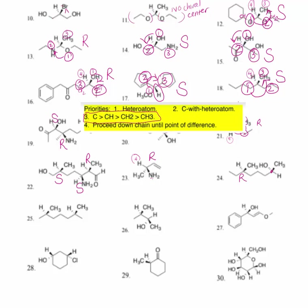For the second asymmetric center of number twenty-four, I start with number one at the OH. H is number four. The rest of the molecule is number two, and the methyl group is number three. You have to put yourself in the correct position, and looking at it you can see it's rotating counterclockwise. So that makes this an S configuration.